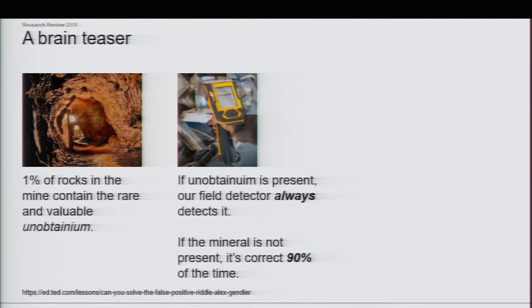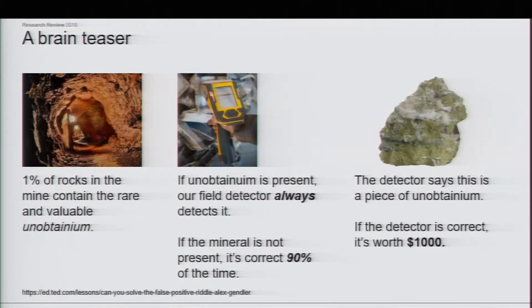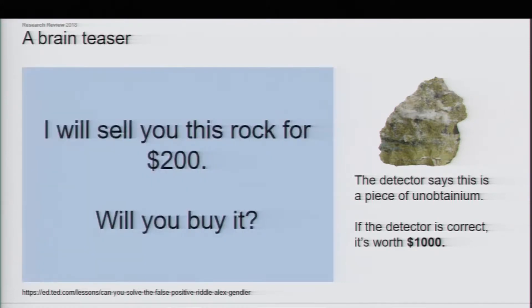Let's say that correctly: it's correct 90% of the time. So it's pretty good — perfect when unobtainium is there and pretty good when it's not. So I have a rock, and the detector says this is a piece of unobtainium. If the detector is correct, it's worth $1,000. I'm selling this rock — who's buying?